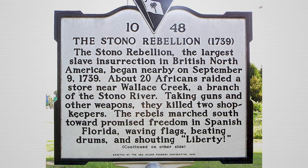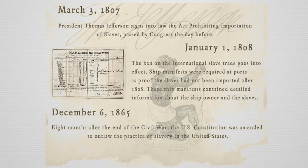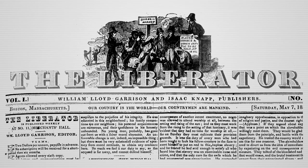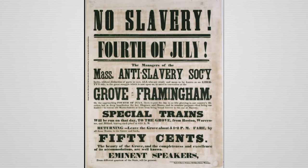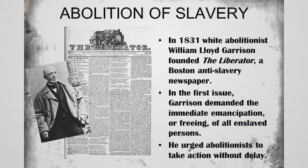In 1739, the Stono Rebellion, one of the earliest slave revolts, occurs in Stono, South Carolina. In 1808, Congress bans foreign importation of slaves. In 1831, in Boston, William Lloyd Garrison begins publication of the anti-slavery newspaper The Liberator and becomes a leading voice in the abolition movement.